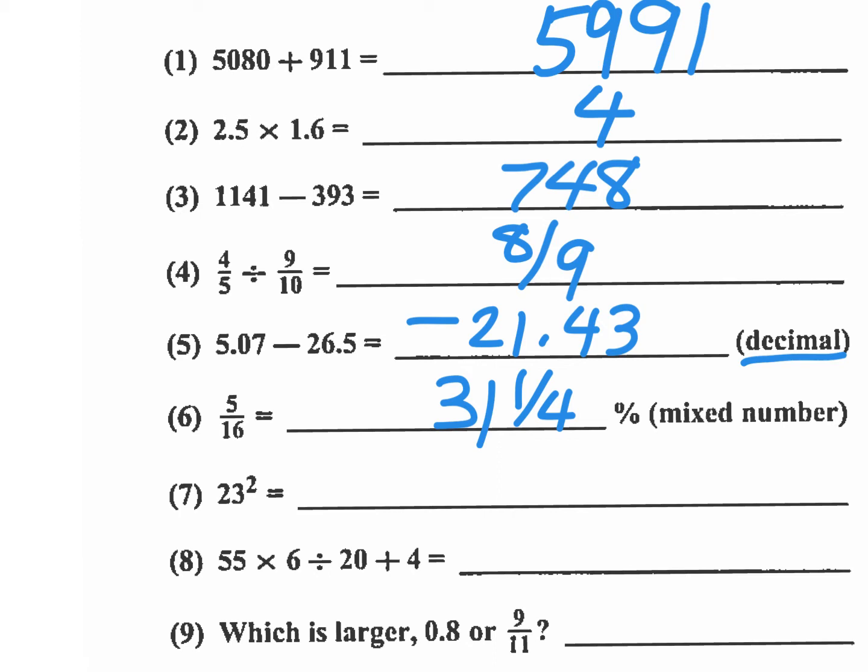Number 7, 23 squared. That's 529. What if you don't have that memorized? Then I'm going to share a little shortcut for any number that has to be squared if you do not have it memorized.